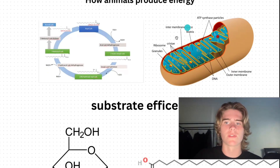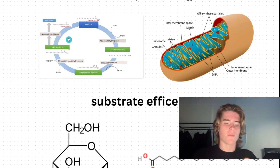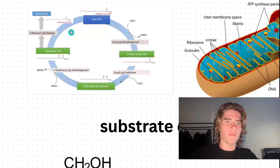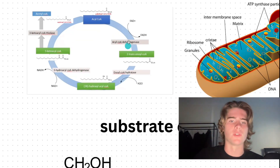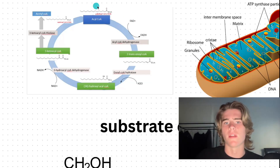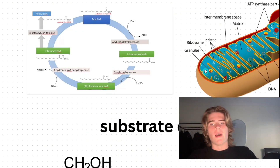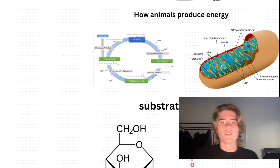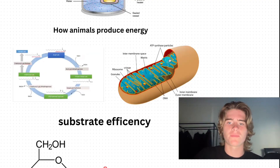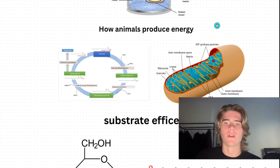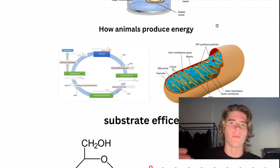How animals process energy: we process it chemically in the cell, in the cytoplasm, in the mitochondria. This is an example of fatty acid beta-oxidation. You take a fatty acid like palmitic acid, use all these enzymes, and get ATP precursors such as acetyl-CoA. Basically, ATP is what we use for energy — not calories, not heat.